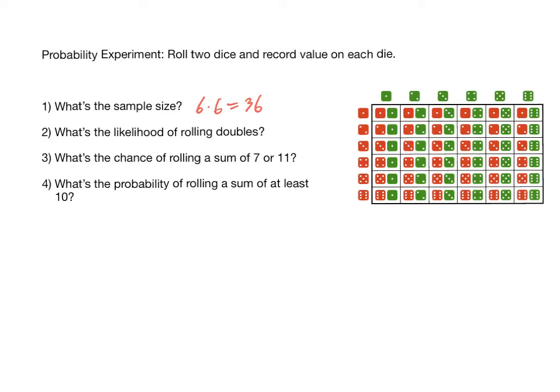Now, what's the likelihood of rolling doubles? Well, let's go through and follow and find all the desired outcomes, in this case, doubles. The one, one is a double, the two, two, the three, three, the four, four, the five, five, and the six, six, leaving us with a total of six doubles. So six out of 36, meaning there's a six in 36 chance that when you roll two dice, you'll get doubles.